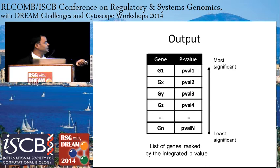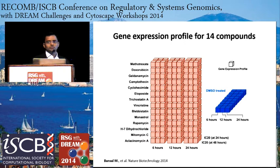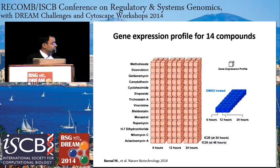Once we have this integration, we rank all the genes based on lowest to highest p-values, indicating the genes most probably involved in the mechanism of action of a drug. We then applied this method on a dataset also used in one of the DREAM challenges two years ago. This dataset was generated in DLBCL B-cell lymphoma cell lines, where cell lines were treated with 14 different drugs, profiled at three different time points, and drug treatment was done using two different concentrations. For every drug we have 18 different gene expression profiles and the corresponding DMSO control samples.